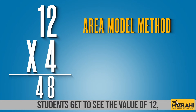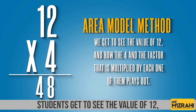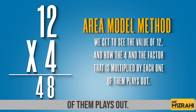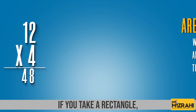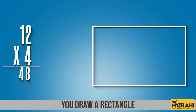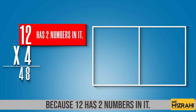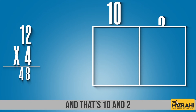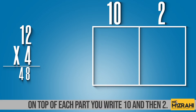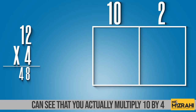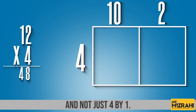But according to the area model, students get to see the value of 12 and how the 4, the factor, is multiplied by each one of them. If you draw a rectangle and divide it into two parts — because 12 has two numbers in it, it has 10 and 2 — you divide it into two parts and on top of each part you write 10 and then 2. This is how students can see that you're actually multiplying 10 by 4, not just 4 by 1.